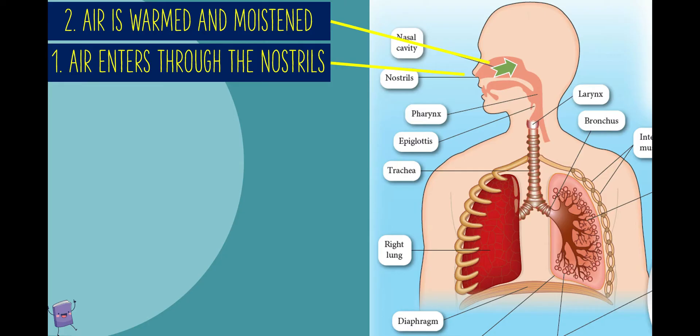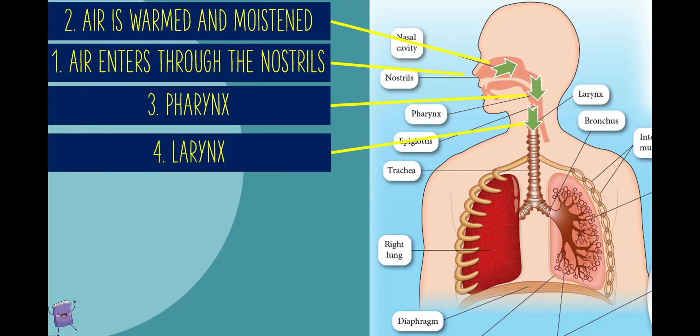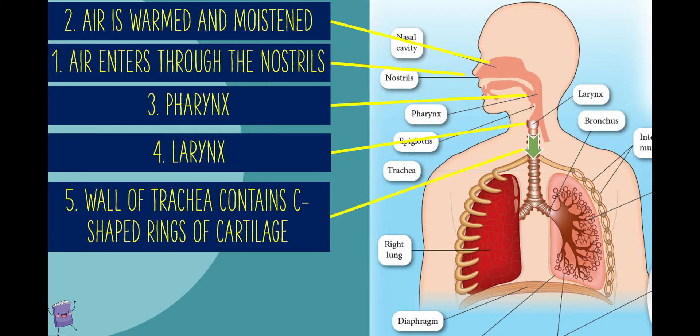Air then leaves the nasal cavity and enters the trachea through the pharynx and larynx. The wall of the trachea contains C-shaped rings of cartilage, which give it support and prevent it from collapsing during inhalation.